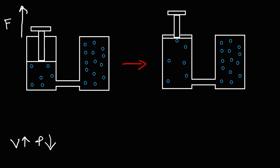Moving on to the next diagram: the volume has increased, so the pressure is lower on the left side. On the right side, we have a region of higher pressure. So at this point, air is going to flow from the right side to the left side. It always flows from a region of high pressure to a region of low pressure.